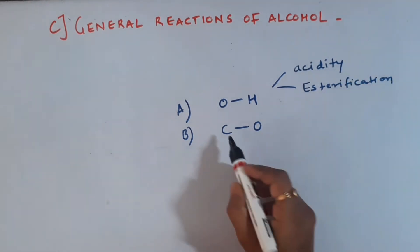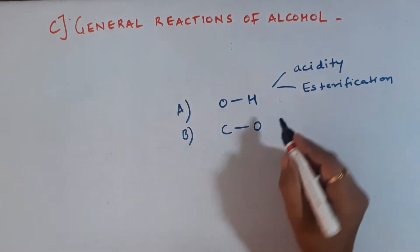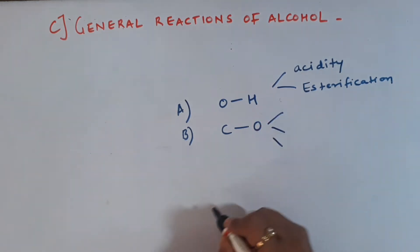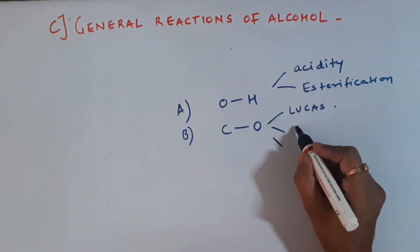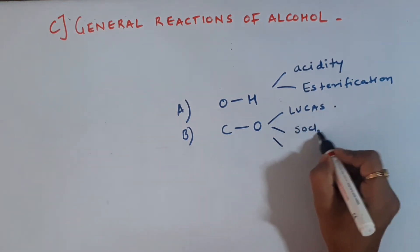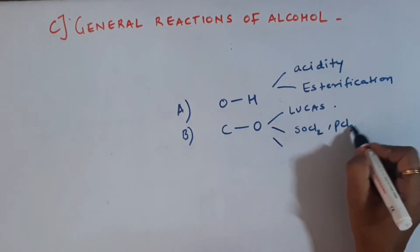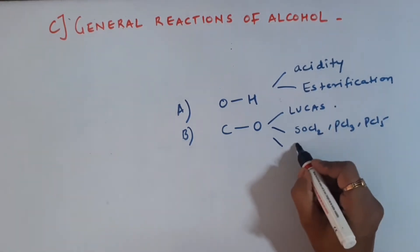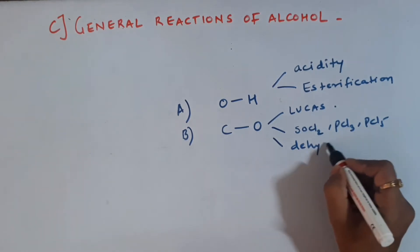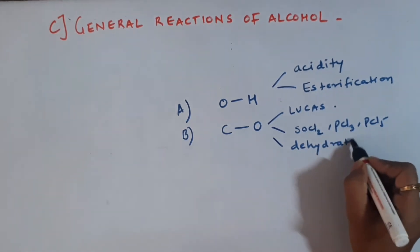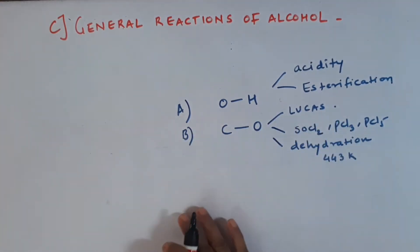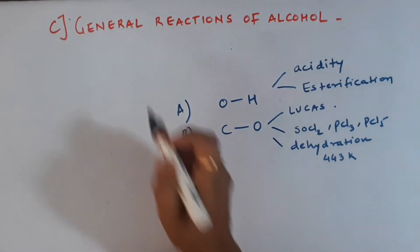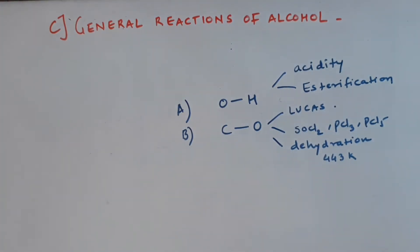In the second category of reactions where we had C-O bond cleavage, we had seen three types of important reactions. The first reaction was the Lucas test. The second reaction was halogenation using reagents like SOCl2, PCl3, and PCl5. The last reaction, where we also discussed the mechanism, was dehydration of alcohols at 443 Kelvin. These were the reactions covered so far, and today let us start with the last category: general reactions of alcohols.